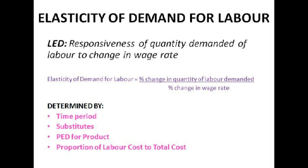Now let's look at the elasticity of demand for labour. The elasticity of demand for labour is the responsiveness of quantity demanded of labour to a change in the wage rate. You calculate it by doing the percentage change in quantity of labour demanded divided by the percentage change in the wage rate. It's influenced by a number of factors. The first one is time period — the elasticity of demand is higher in the long run because it's much easier to trade John for a machine, whereas in the short run workers might have contracts which means you've got to keep them regardless of wage rates.